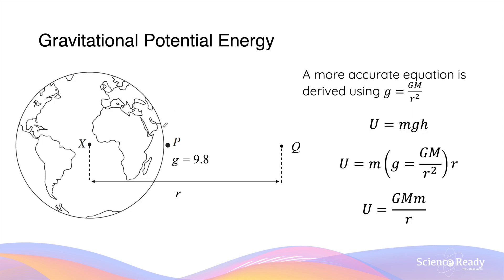So when we are dealing with gravitational potential energy over a larger distance, we need a more accurate equation that accounts for the variability in the g value. We can derive this equation by substituting the g value — GM over r squared, where capital M is the mass of the Earth — into the potential energy formula we saw earlier. This gives us a new equation where the potential energy is equal to GMm over r, where capital M is the mass of the planet, smaller m is the mass of the object, and r is the distance between the centre of the Earth and the point of reference.